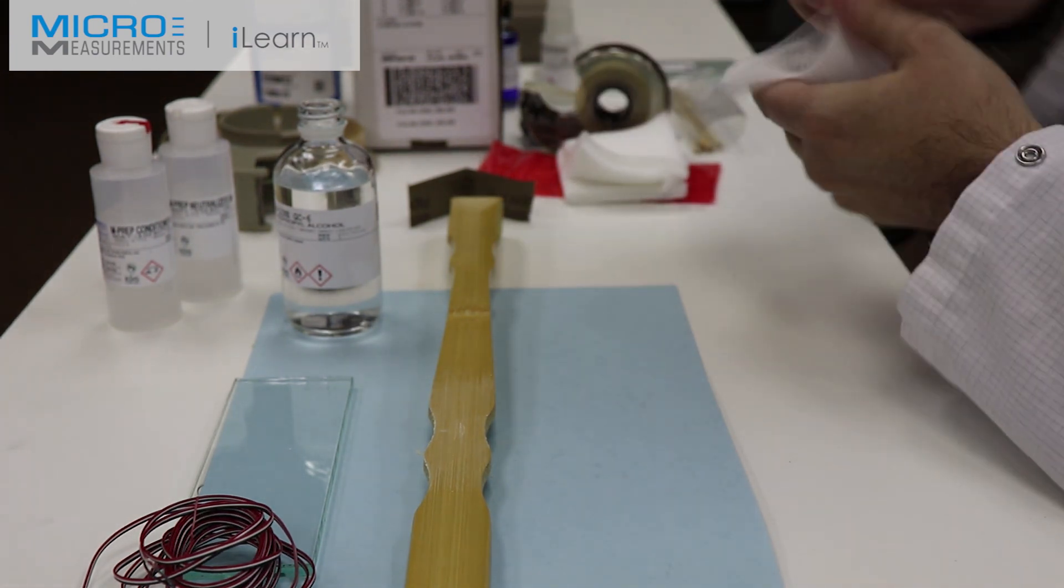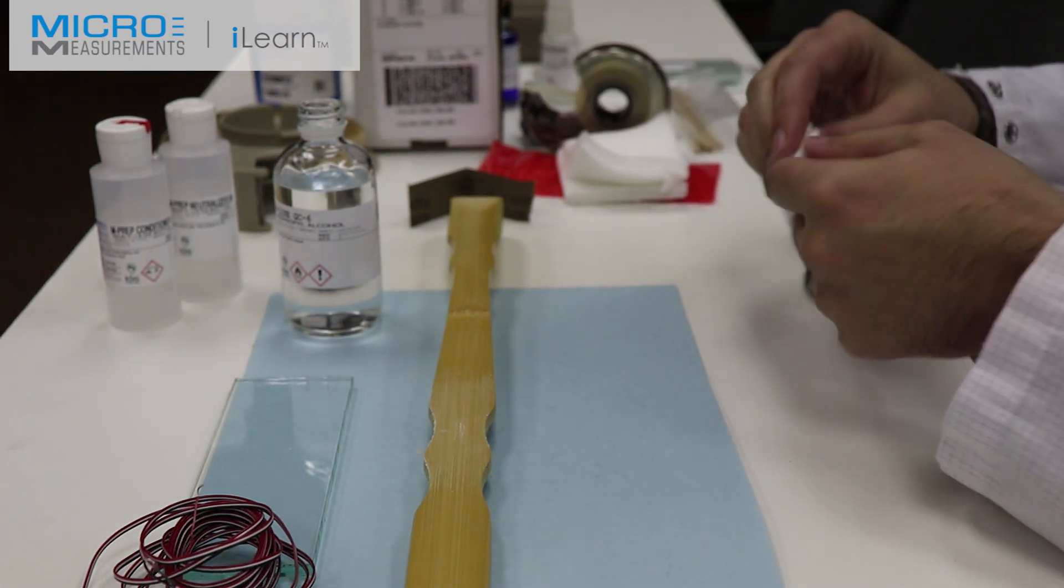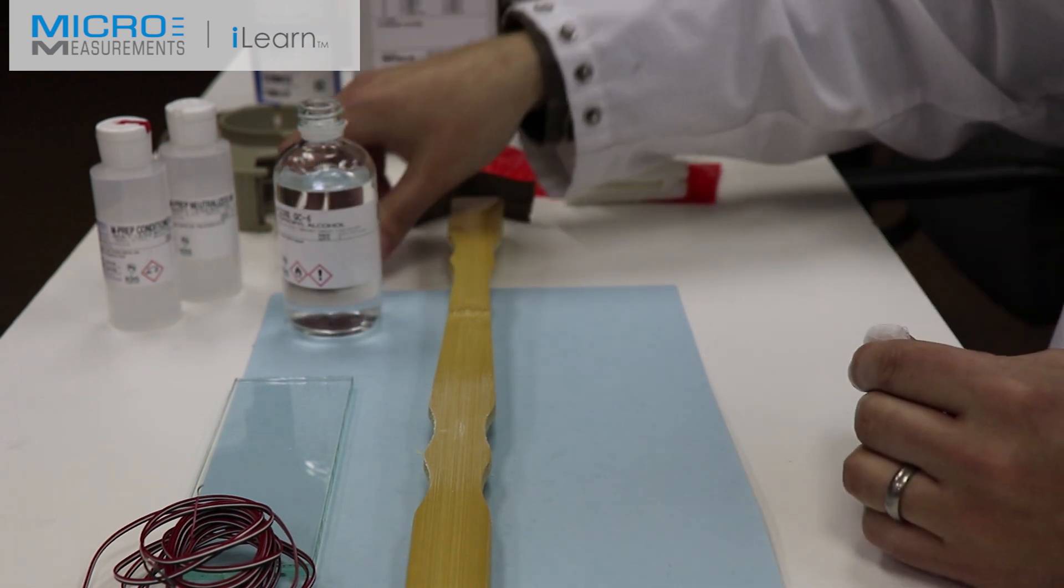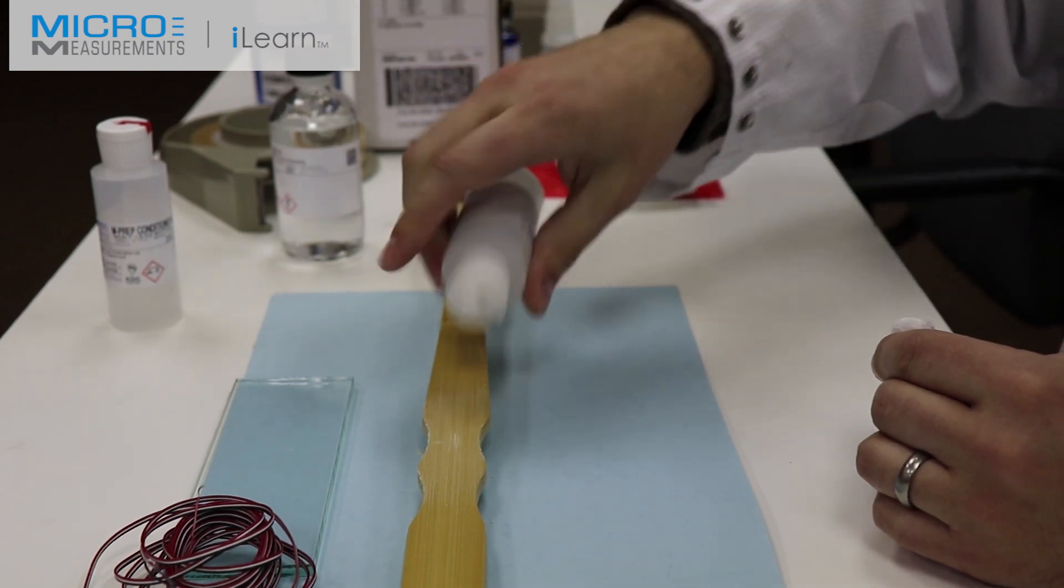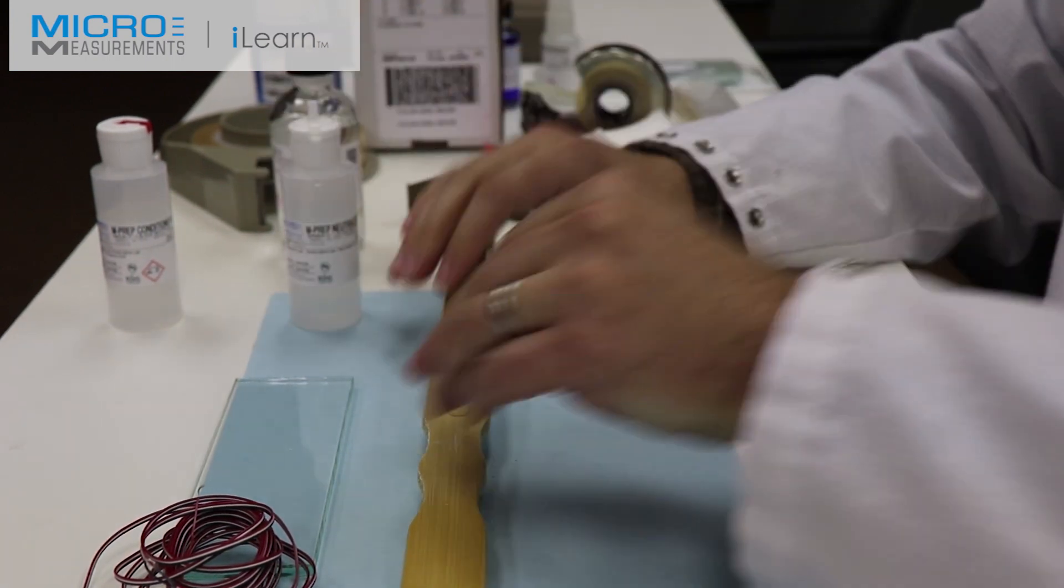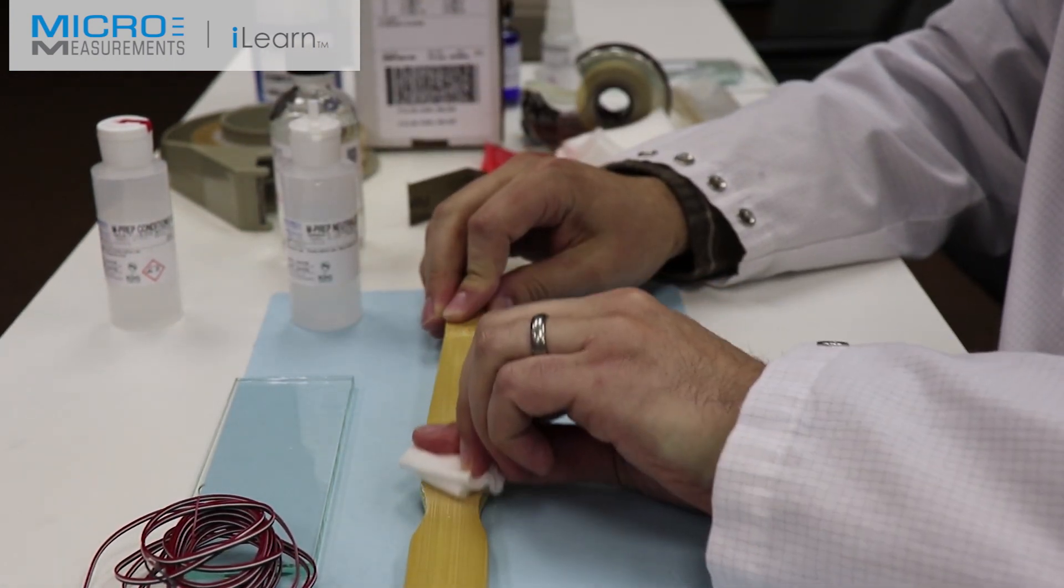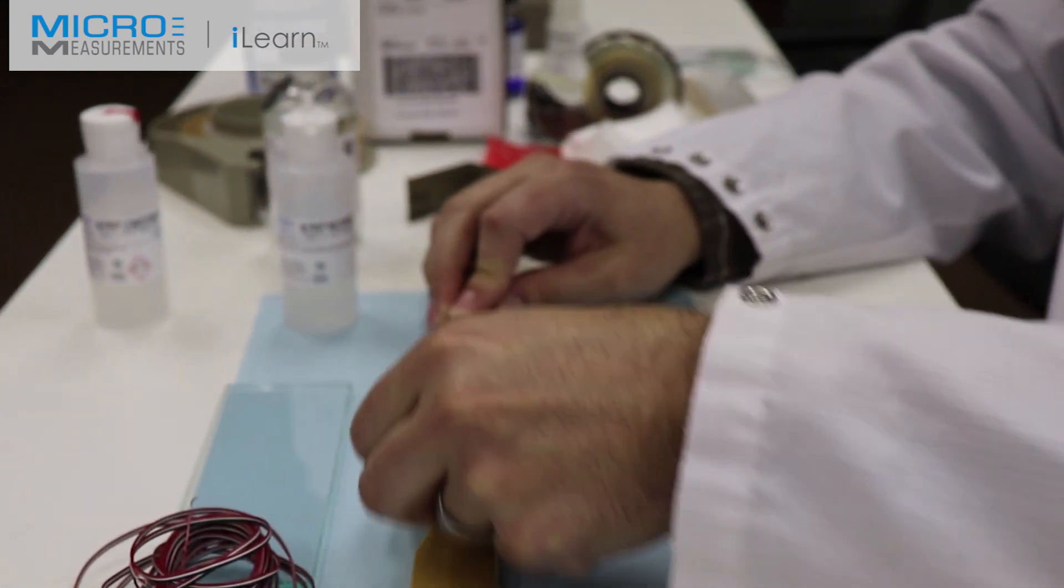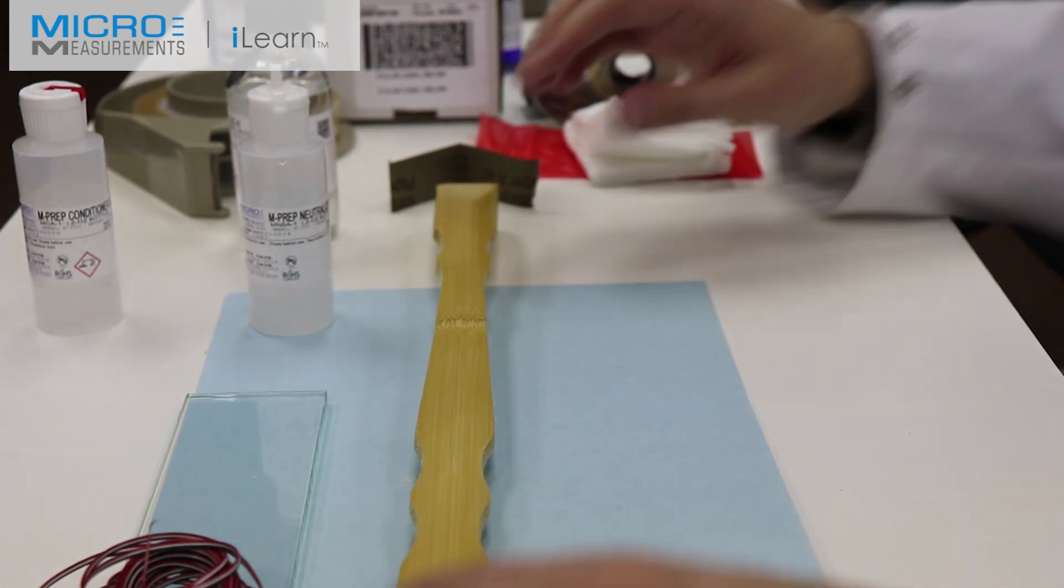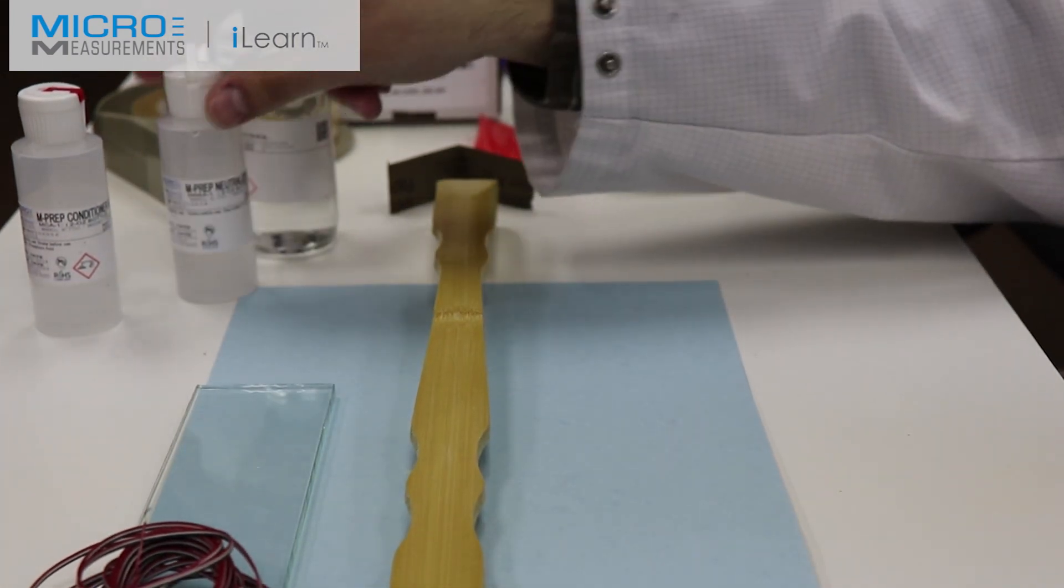And then wipe it with a gauze sponge and some Neutralizer 5A to pick up that dust and get the dirt out of the way. How's that finish looking? It's still a little rough there, so we might want to wet abrade with 320 grit and then we'll call it good.